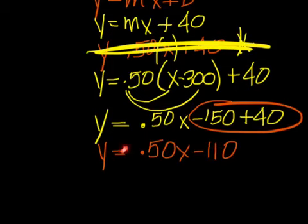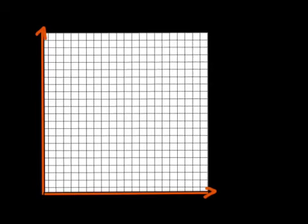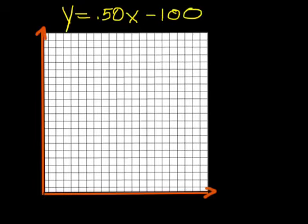This is something that you can graph now. Our equation is y equals point fifty x minus one ten. When we go to graph this we have to come up with a usable scale. So we have a y-intercept of negative one ten.